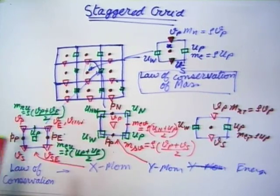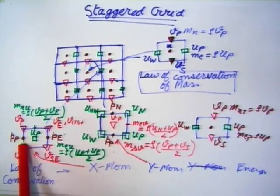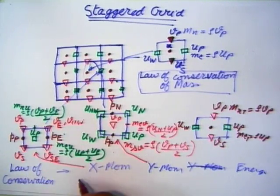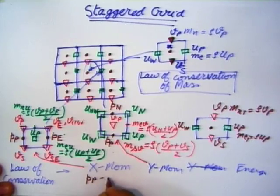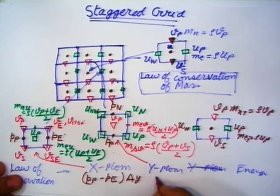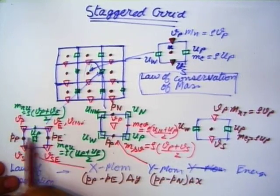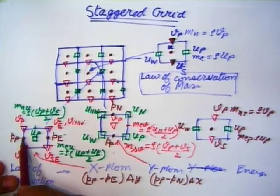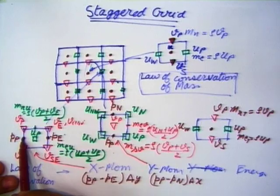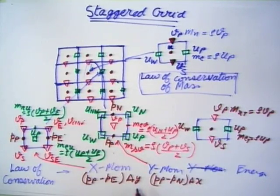The pressure force in x-momentum is (P_P − P_E)·Δy, and in y-momentum it is (P_P − P_N)·Δx. The pressure grid point sits exactly at the face center of the momentum control volume, so no interpolation is needed. We are avoiding interpolation for mass flux in mass and energy conservation, and also for pressure in the momentum equation.